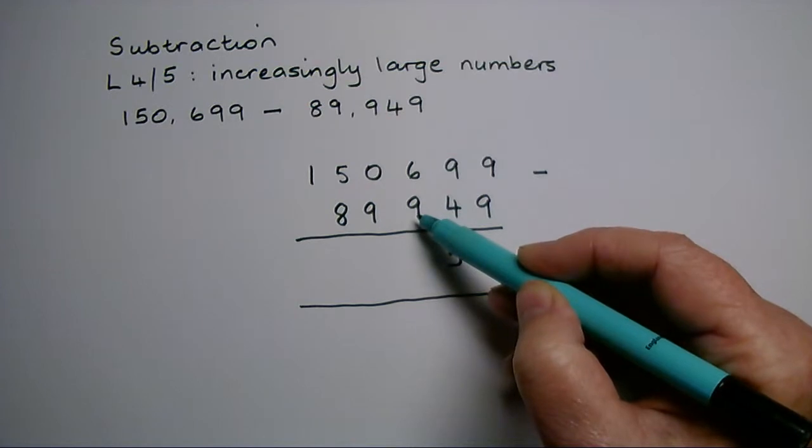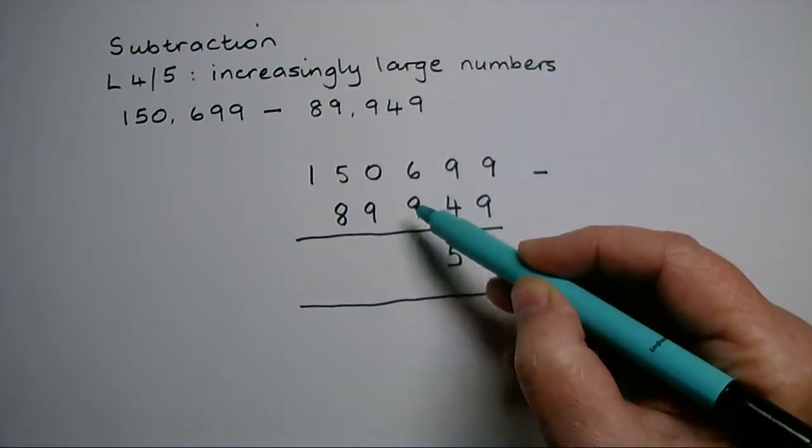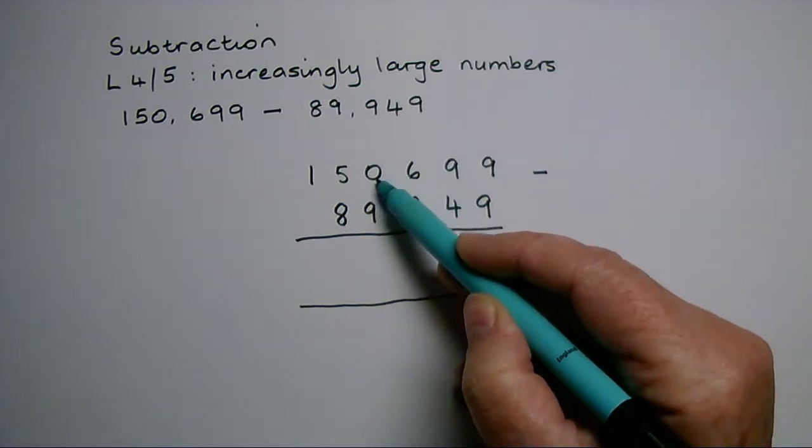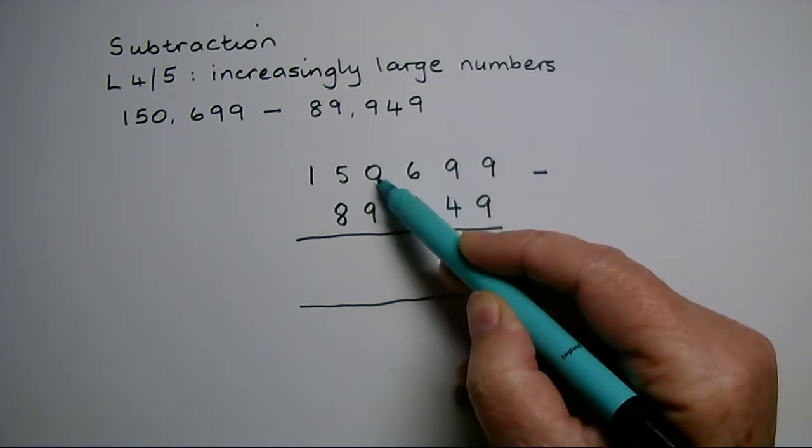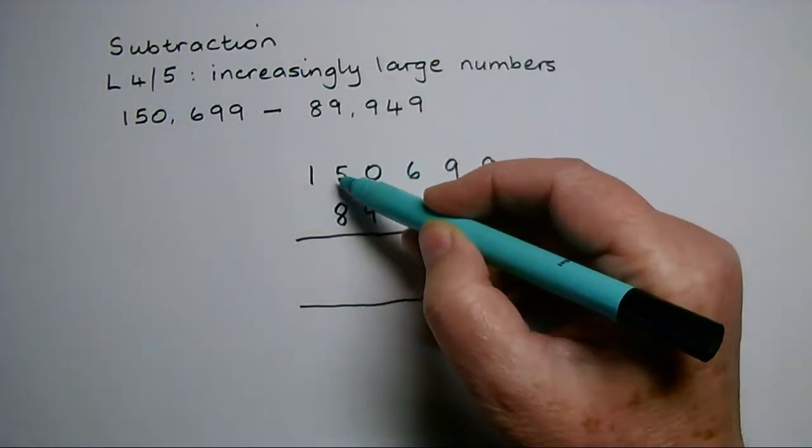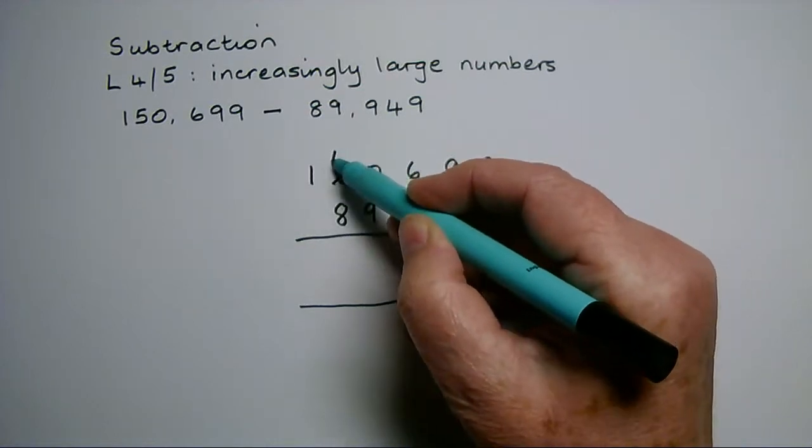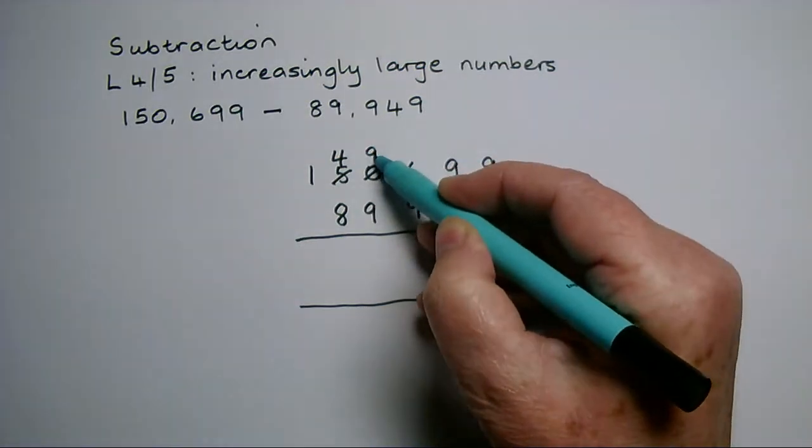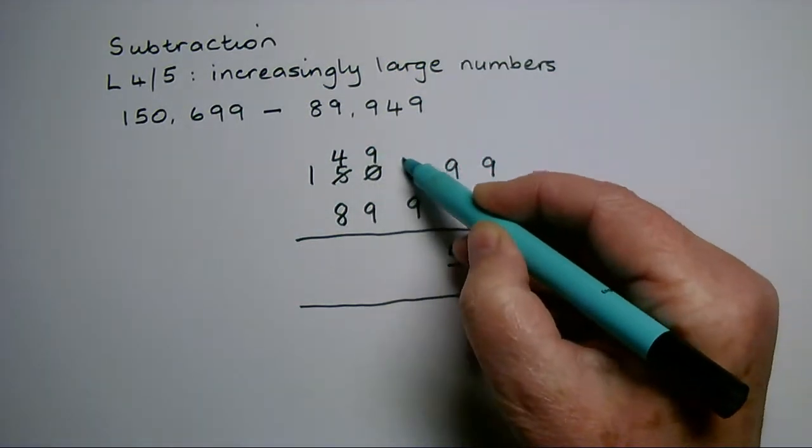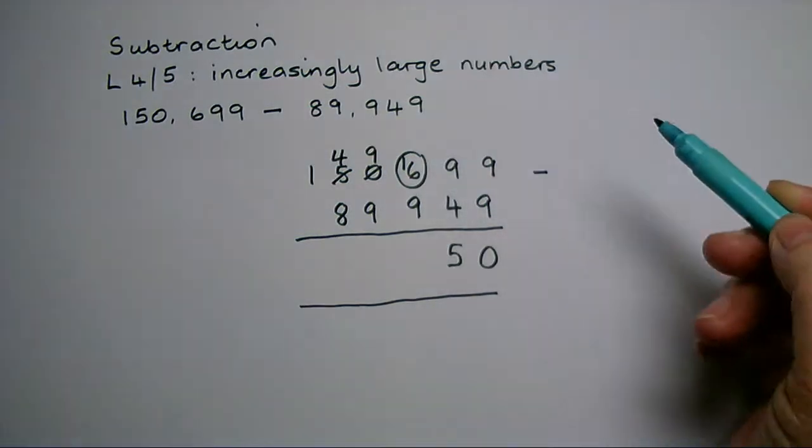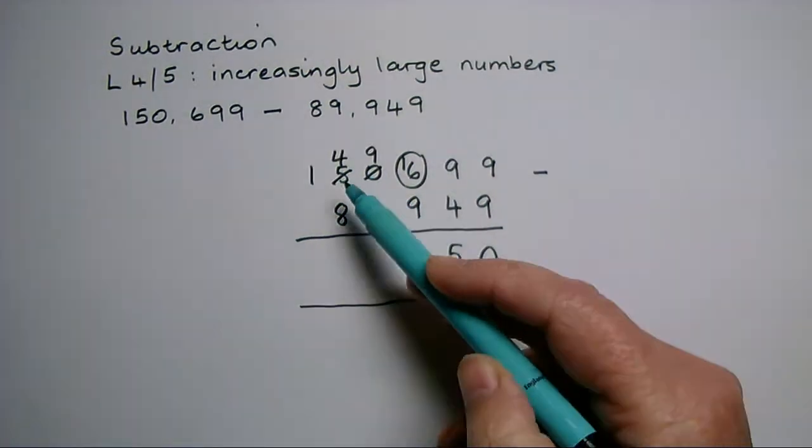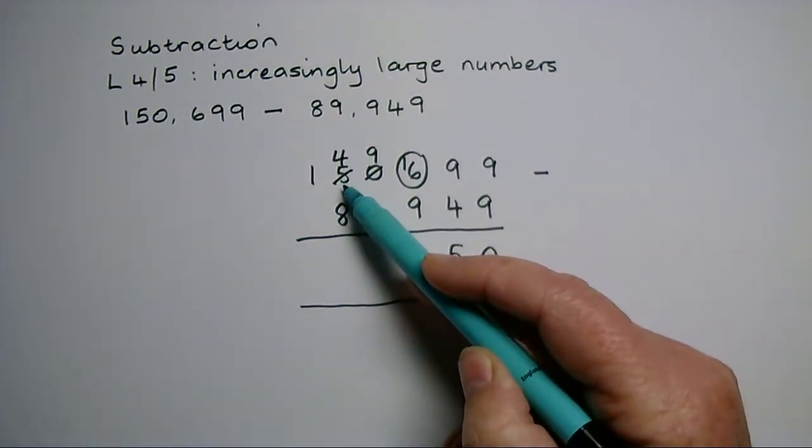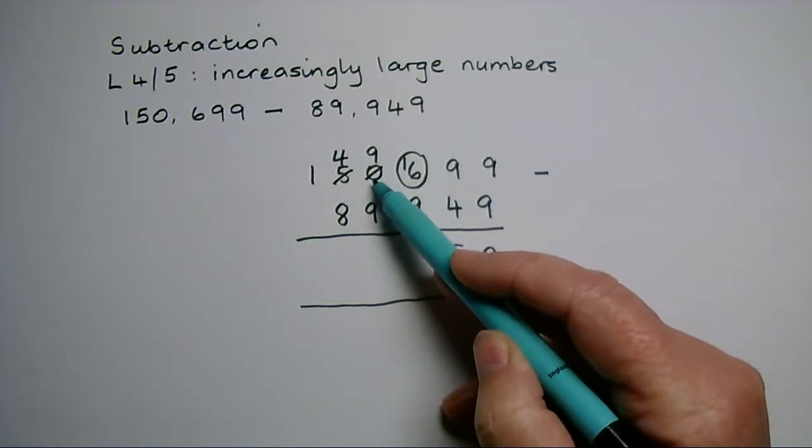But I don't have any thousands that I can exchange from, so I need to take one of the ten thousands and I'll convert that ten thousand into nine thousands and ten hundreds. So I've taken this ten thousand here and I've turned it into nine thousands and ten hundreds.